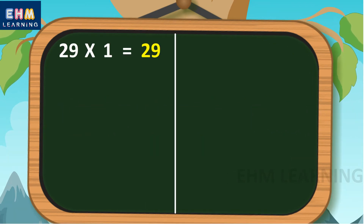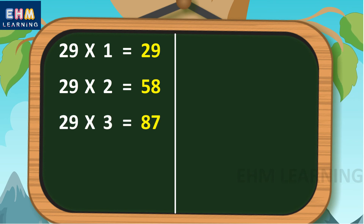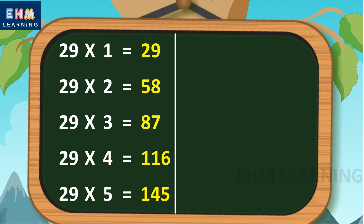29 1s are 29. 29 2s are 58. 29 3s are 87. 29 4s are 116. 29 5s are 145.